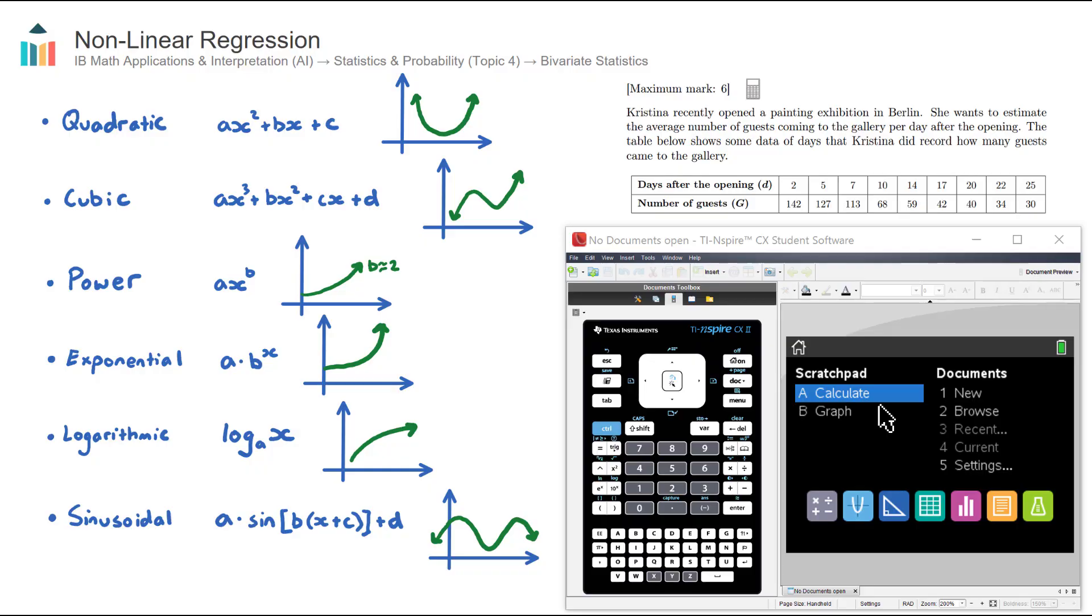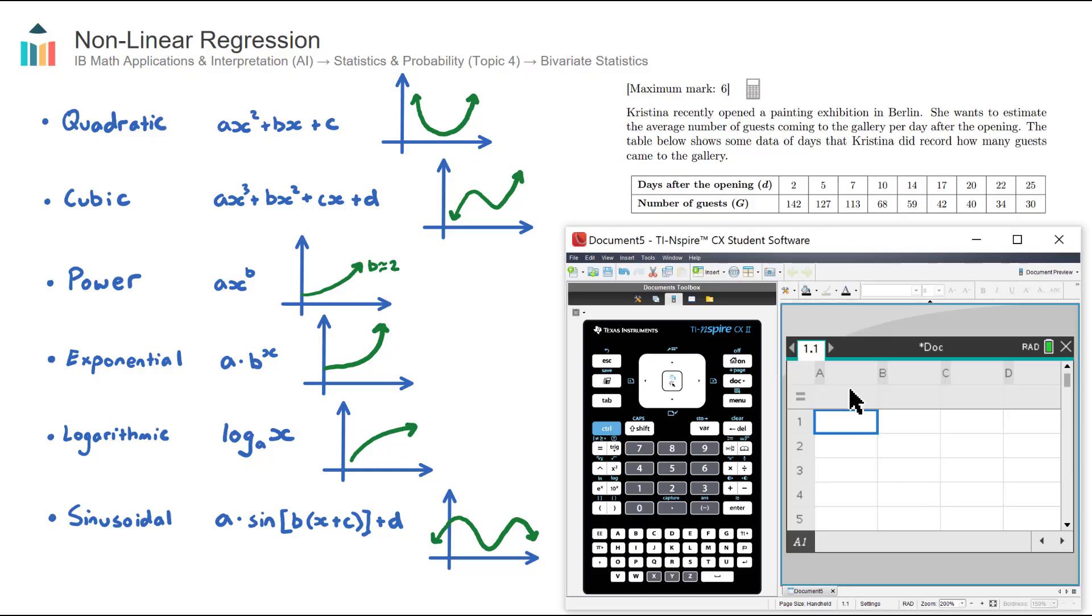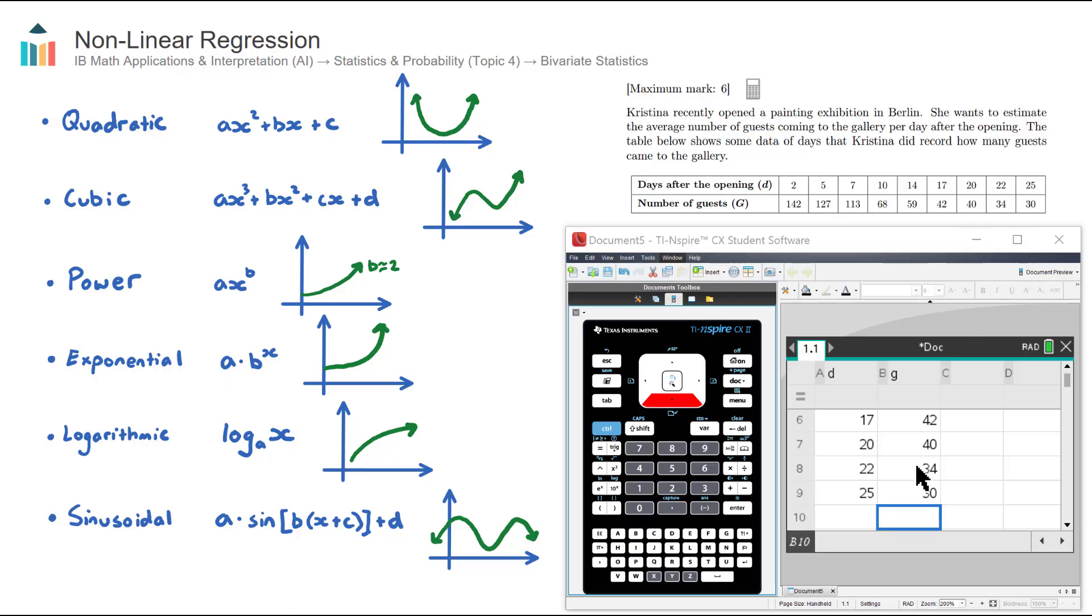Let's enter this data in. So we go into the statistics section. We label our columns. So the first column is D for days, and the second column is G for guests. And let's go ahead and enter it. I'll just enter the first one then I'll pause the video. So the first data point is 2 and 142. And then we just go down the column. So I'm just going to pause the video and finish this. There we have our data entered there.